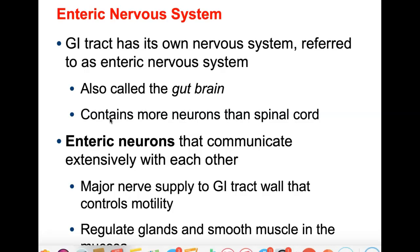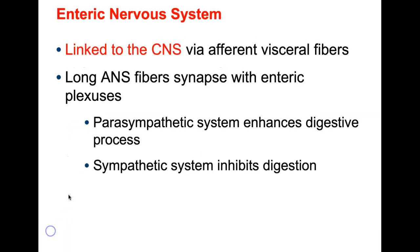The gastrointestinal tract has its own nervous system — we call this the enteric nervous system. There are lots of neurons here, more than are in the spinal cord. They help the GI tract wall control movement and smooth muscle direction, and regulate whether glands secrete a lot of mucus or a little. Your gut can kind of think for itself, though it is still controlled or influenced by your central nervous system. Your parasympathetic system can enhance the digestive process — remember, parasympathetic is rest and digest. Sympathetic, or fight or flight, usually inhibits digestion because if you're trying to run, we don't want to waste energy breaking down food.